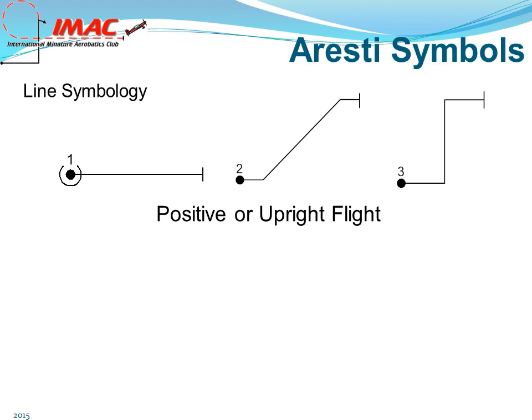Positive or upright flight is indicated by a solid line. Figure one, shown here, will be a horizontal line flown upright. Figure two begins wings-level horizontal flight, pulls to a 45-degree upline, and ends wings-level horizontal flight. Figure three begins wings-level horizontal flight, pulls to a vertical upline, and then will push to wings-level horizontal flight.